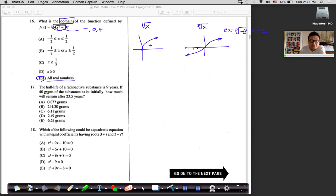Okay, 17. The half-life of radioactive substance is nine years. If 40 grams of substance exists initially, how much will it remain after 23.5 years? We've got to go with the half-life equation. Half-life is a topic of exponential function, exponential decay to be exact.